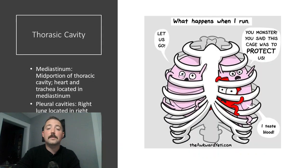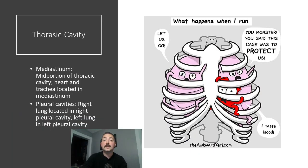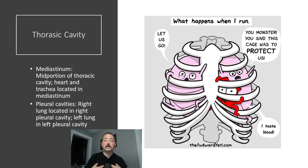The thoracic cavity can be broken into three subcategories: left and right pleural spaces, and the mediastinum in the middle. Your lungs live in the pleural spaces, and your heart hangs out in the mediastinum.